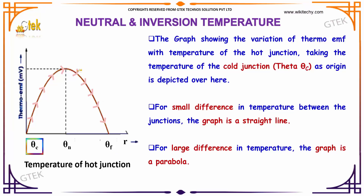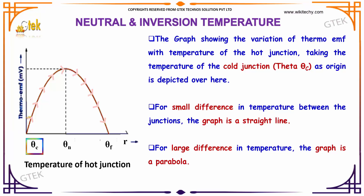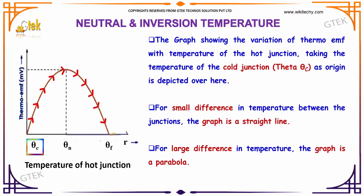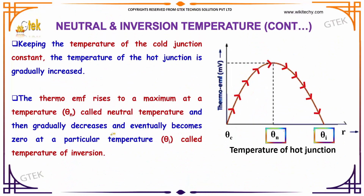Now we will talk about the neutral and inversion temperature. The graph shows the variation of thermo-EMF with the temperature of the hot junction, taking the temperature of the cold junction θ_c as origin. For small differences in temperature between the junctions, the graph is a straight line; for larger differences it is a parabola. Keeping the cold junction temperature constant and gradually increasing the hot junction temperature, the thermo-EMF rises to a maximum at a temperature θ_n — that's the neutral temperature.